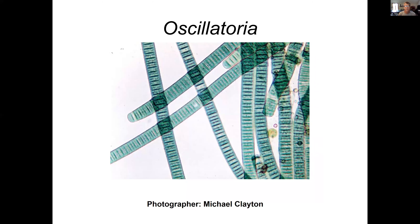Oscillatoria is one that is common benthic and can be found in some lakes around here in Kansas. The cells actually glide on solid surfaces in a spiral method, so you'd see them moving around on your slide if this was a live preparation.